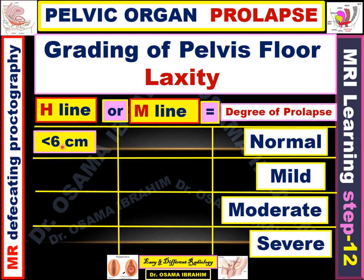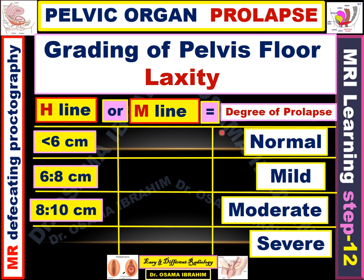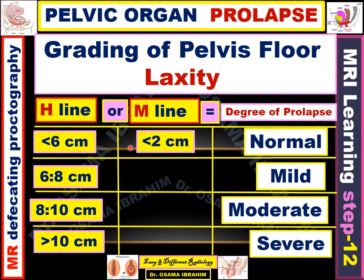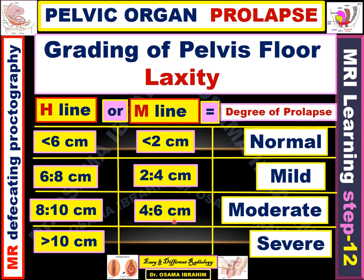For the H line: less than 6 cm represents normal width of the levator hiatus; 6 to 8 cm is mild laxity; 8 to 9 cm is moderate; and more than 10 cm represents severe laxity of the pelvic floor. For the M line: less than 2 cm represents normal — meaning no descent; 2 to 4 cm is mild descent; 4 to 6 cm is moderate; and more than 6 cm represents severe descent or severe pelvic floor prolapse. We can use both the H line and M line to detect the degree of descent and whether prolapse is present.